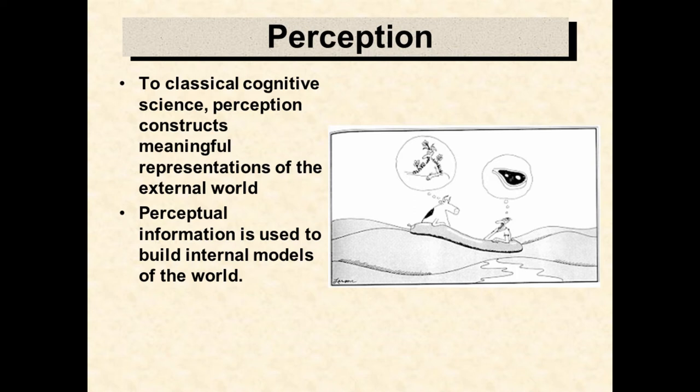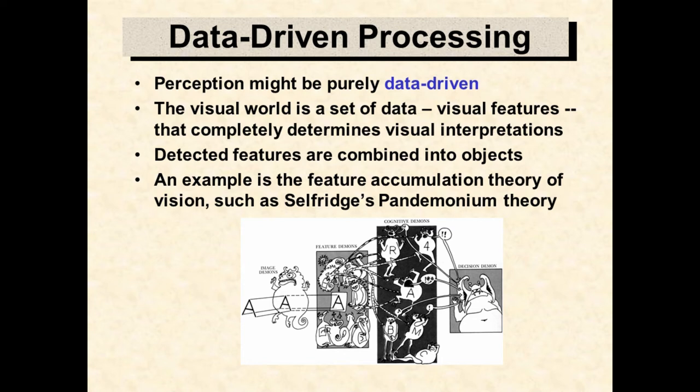According to classical theories, perception is used to provide information for constructing useful models or representations of the real world. Perception provides sense data for modeling, thinking, and planning inside the classical sandwich. One common theory about perception is that it is purely bottom-up or data-driven. This means that perceptual processes detect visual features and then combine these features into feature combinations or conjunctions that define objects.